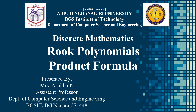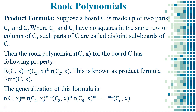Hello students. In this video, let's learn the product formula to find the rook polynomial. Here is the concept which defines the specialization of the product formula and when to use it. Suppose a board C is made up of two parts C1 and C2, where C1 and C2 have no squares in the same row or the same column of C. Such parts of C are called disjoint subboards of C. Then the rook polynomial R of C(x) equals R of C1(x) times R of C2(x), and the generalization is R of C1(x) times R of C2(x) times R of C3(x), up to R of Cn(x).